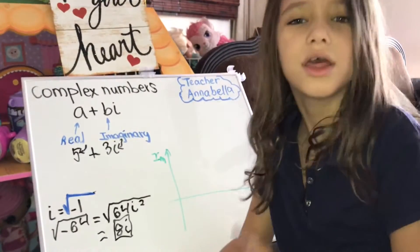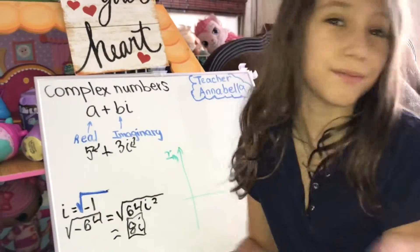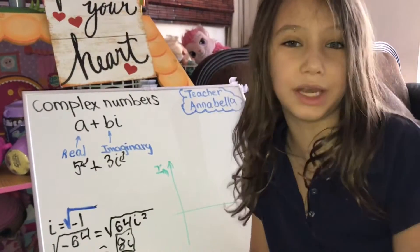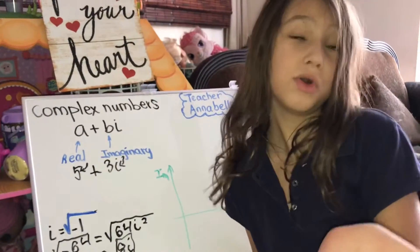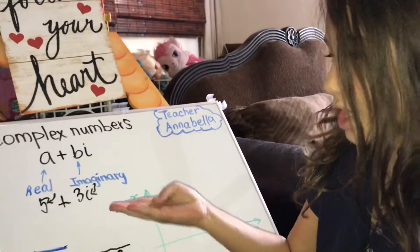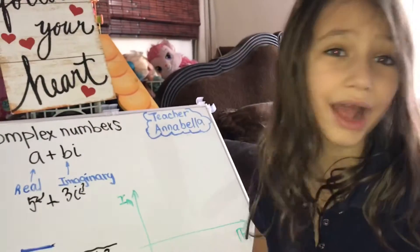Think about it. Think of them as bananas and potatoes. You cannot count a banana as a potato. They're different. Same thing with the real and imaginary numbers. You cannot add them together.